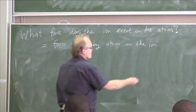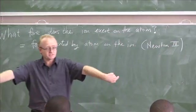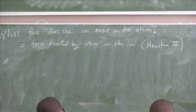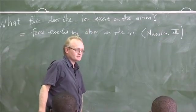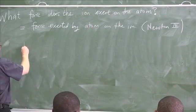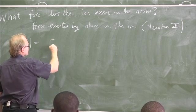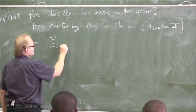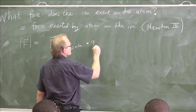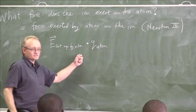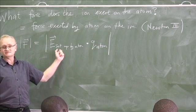I'm using Newton's third law. They'll have opposite directions but the same magnitude. What is the force exerted by the atom on the ion? This force F — let's work out its magnitude — will be the magnitude of the electric field set up by the atom times the charge of the atom. It's just the charge of the atom times the electric field that the atom feels.